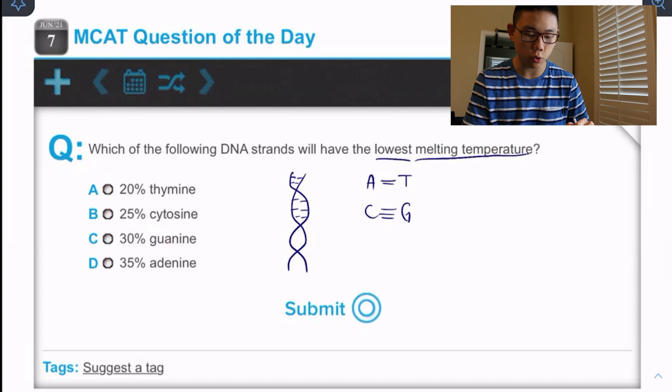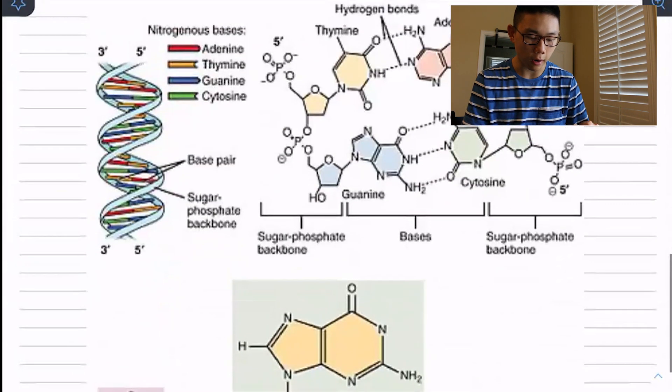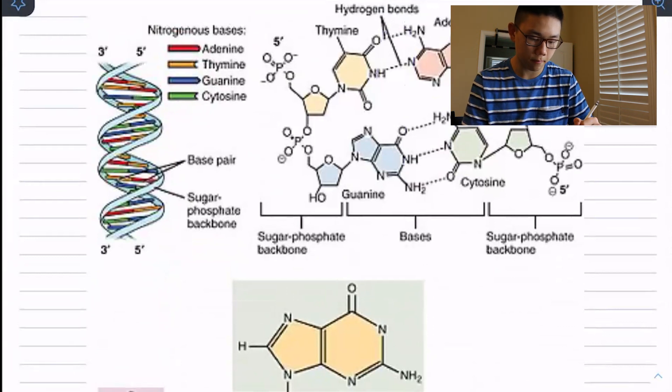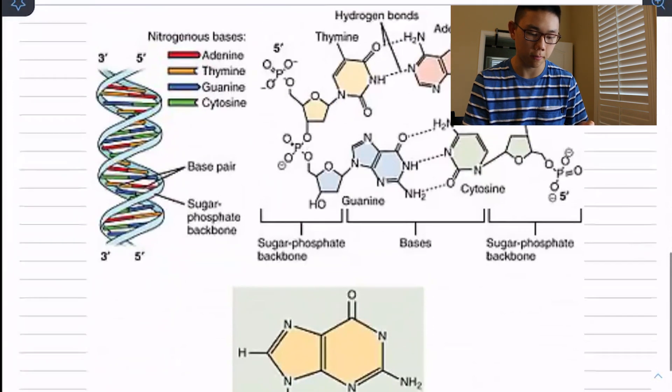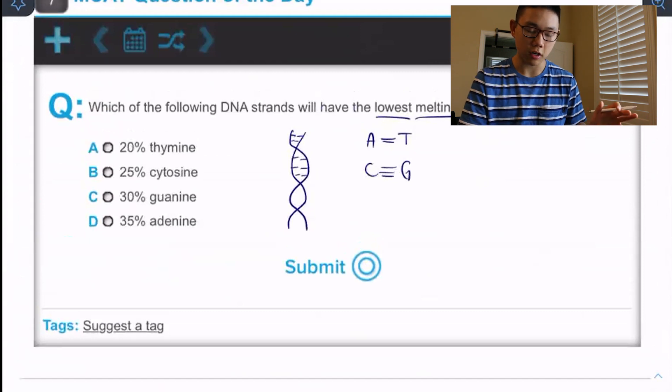And if we want a visualization, I'll quickly show you this image from Google. But that's what the hydrogen bonds look like in terms of which functional groups are bonding between the nucleotides. Okay. That's not extremely important here, but it's always great to visualize.